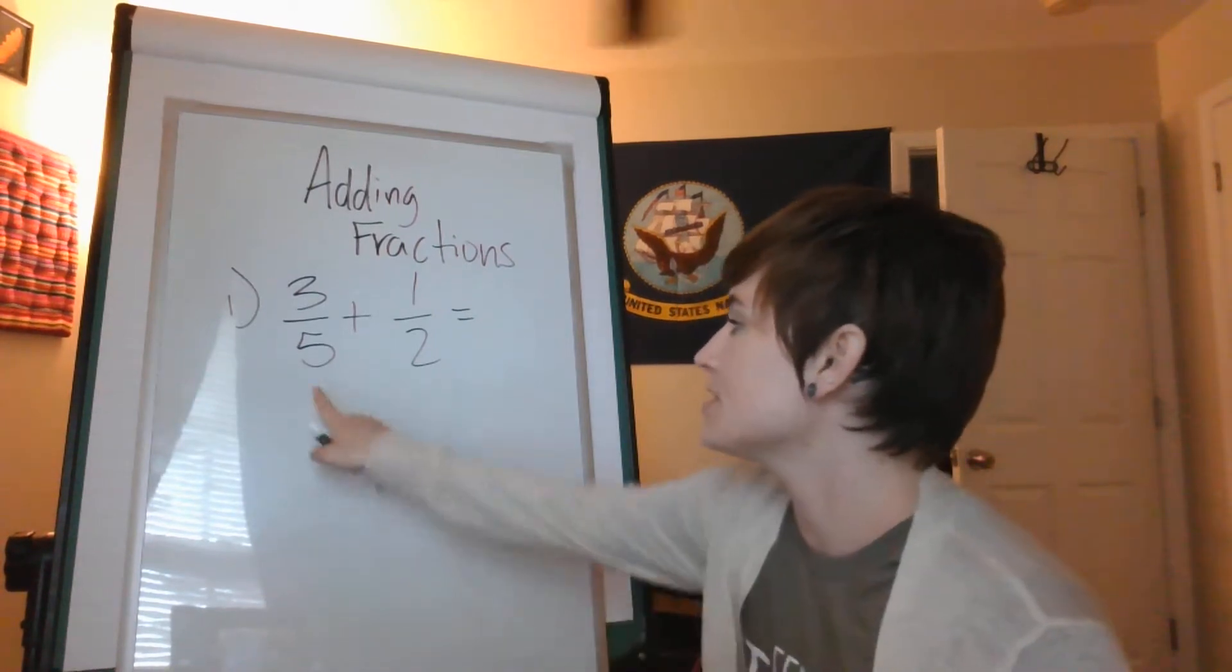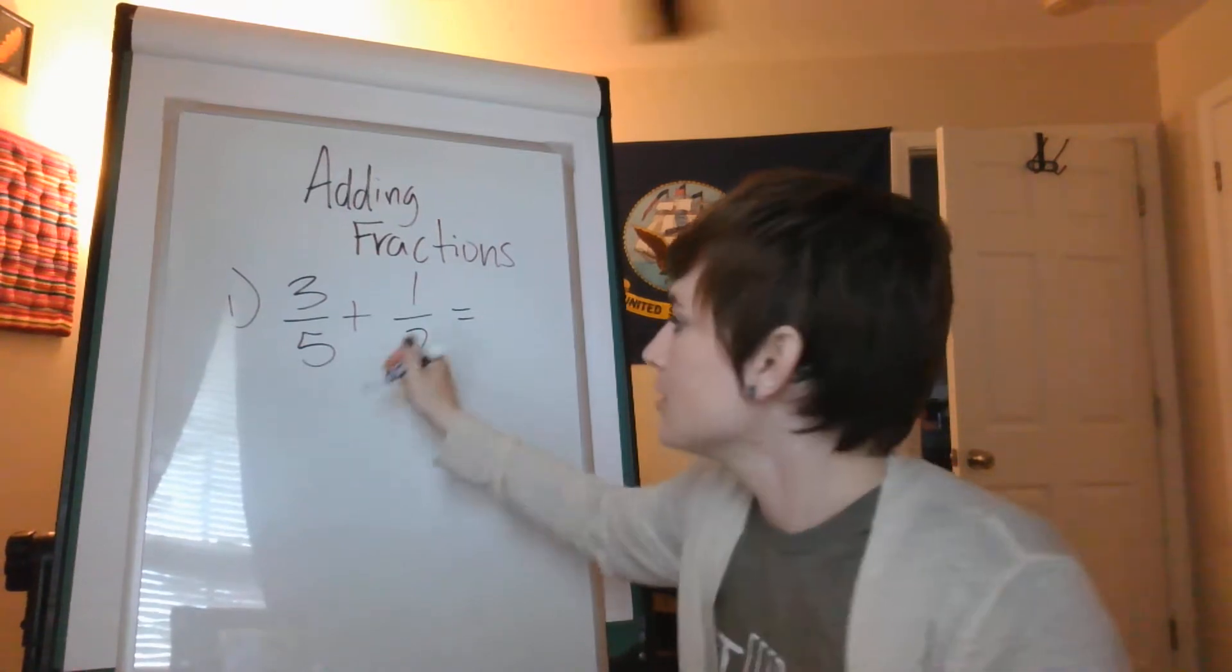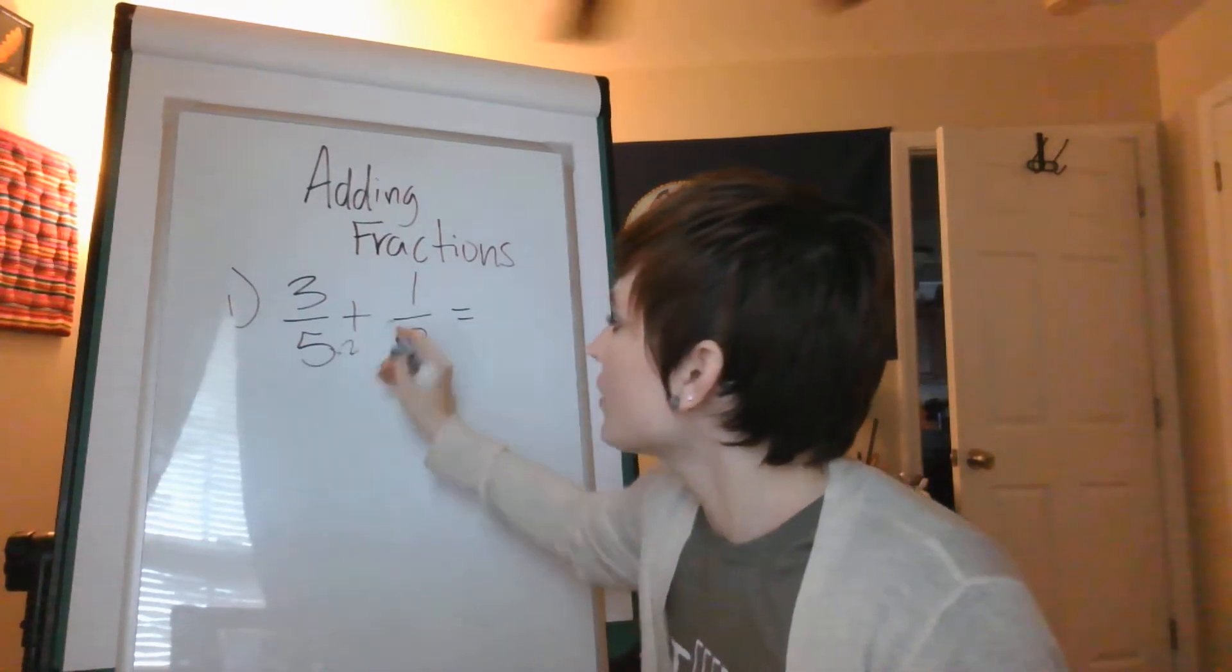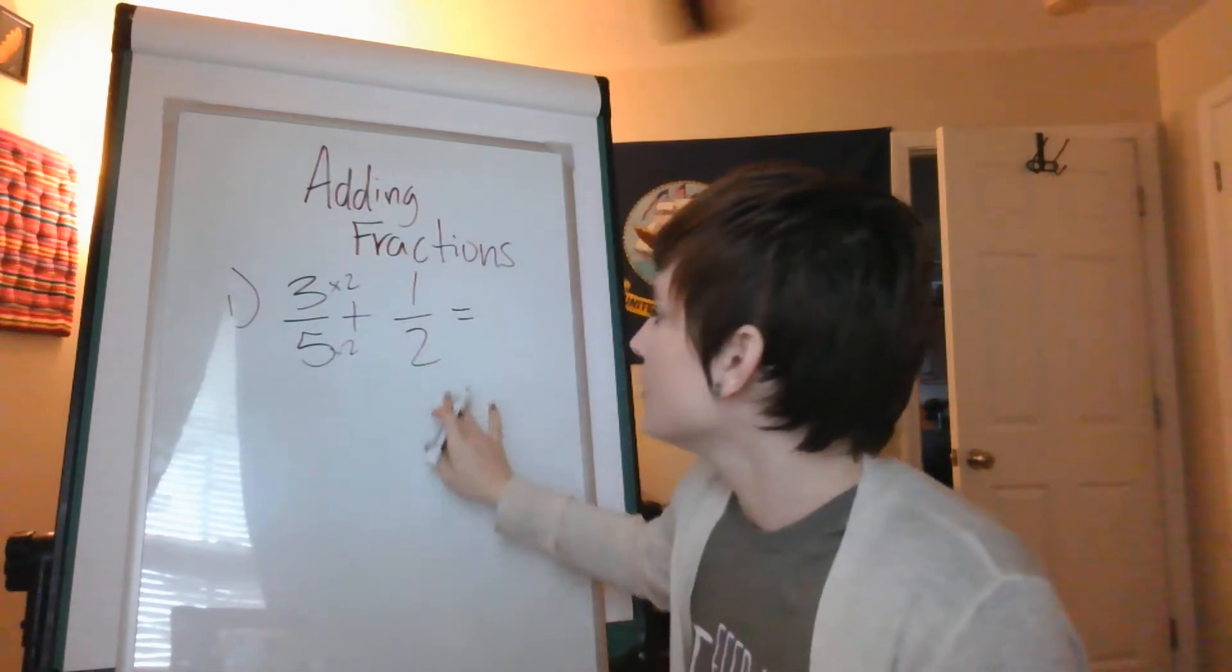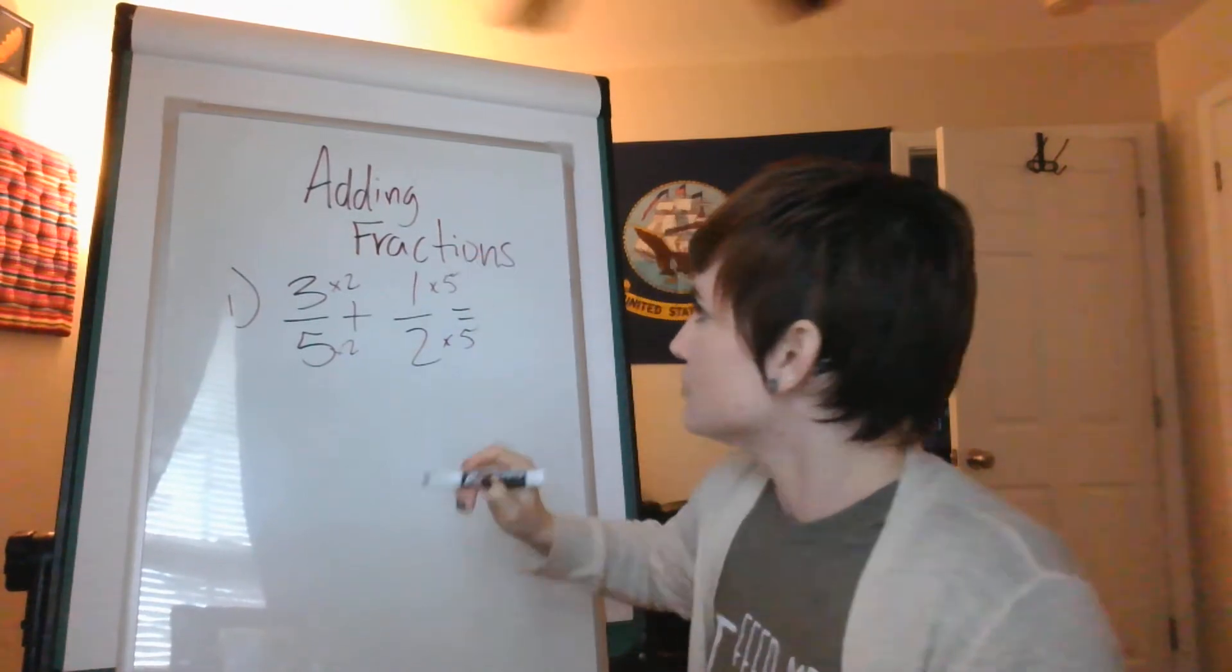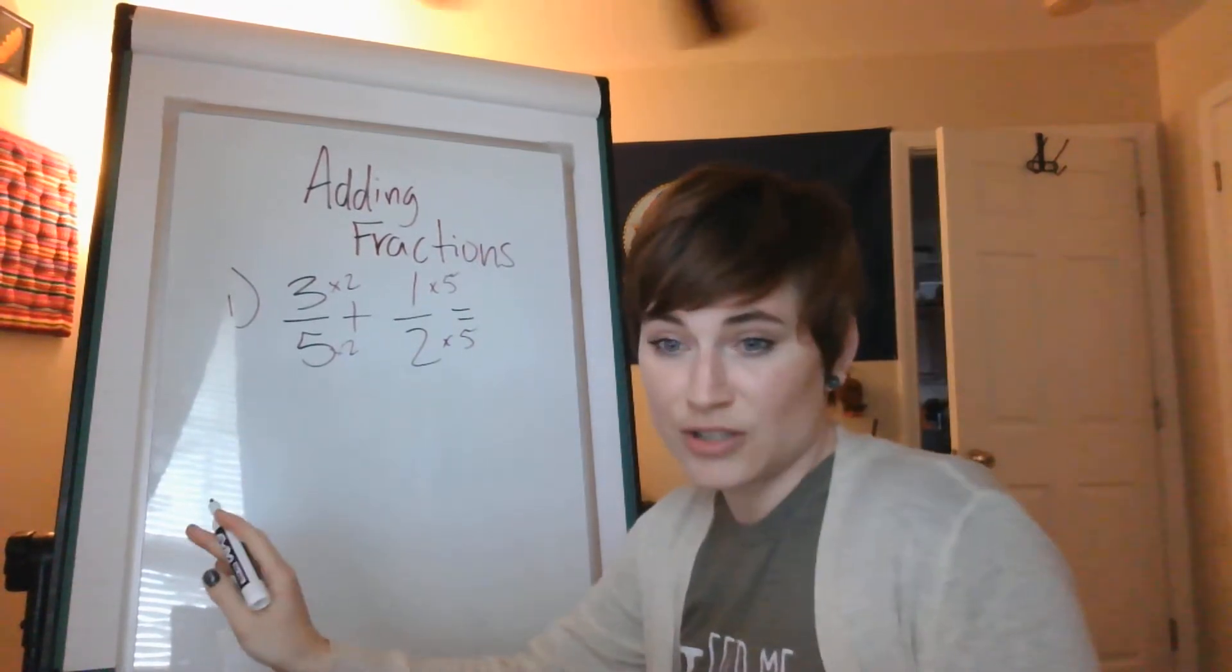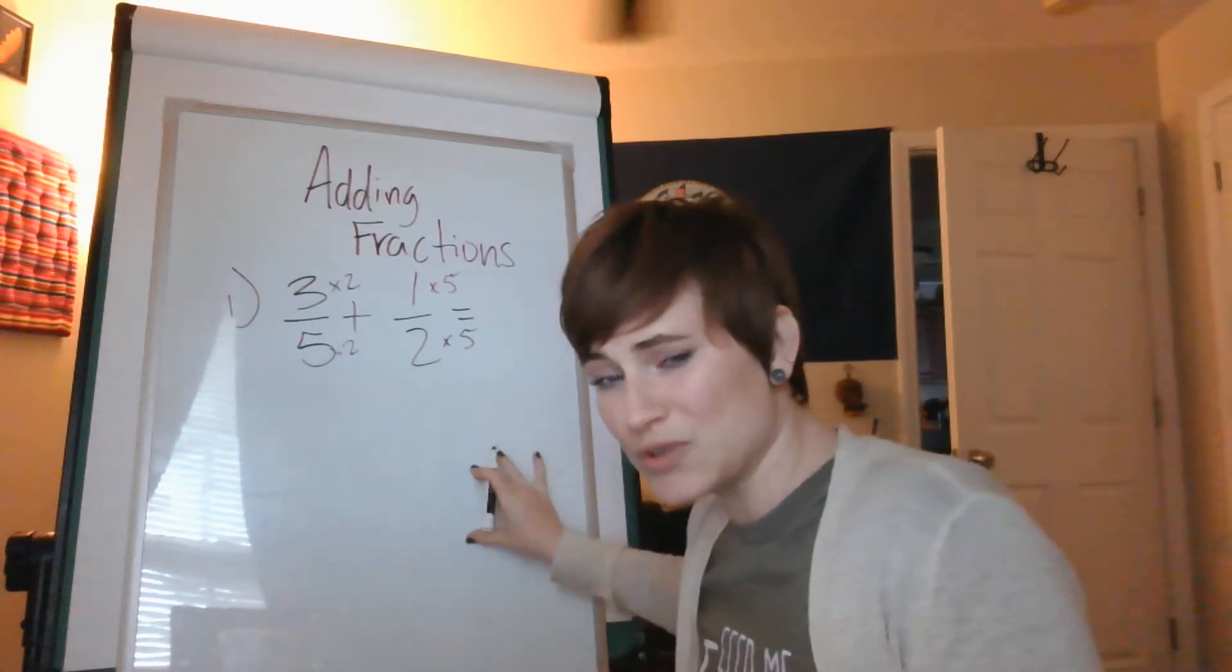So the easiest way to do this is we have five and two. We're going to multiply these two by each other by two. And whatever we do to the denominator, we do to the numerator. So the first thing you need to do, let's create our multiples together.